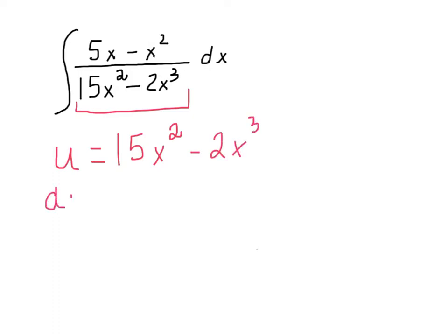du/dx would be 30x - 6x². At this point when you multiply by the differential dx you end up with du = (30x - 6x²)dx.